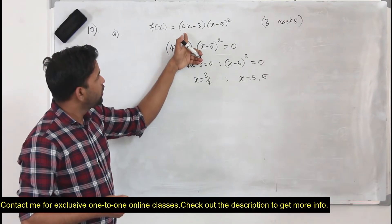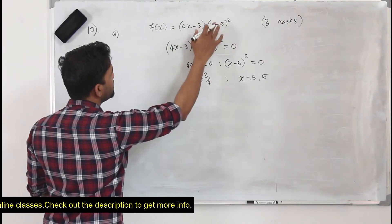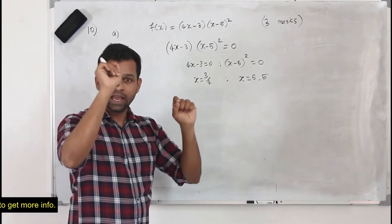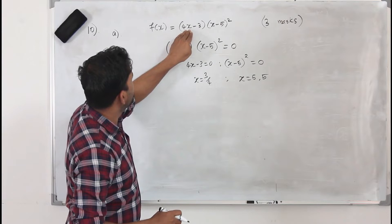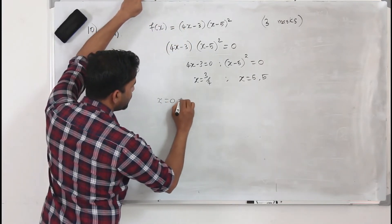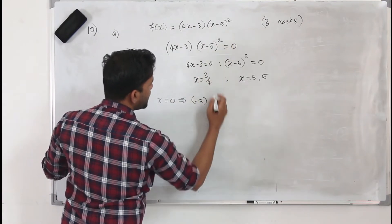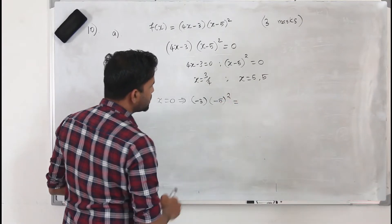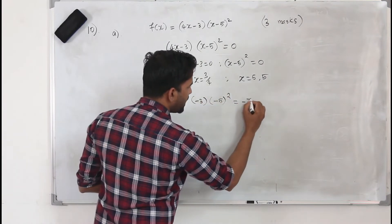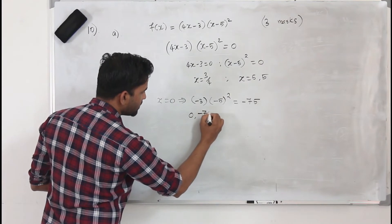Now we need to find the y-intercept. How do you find the y-intercept? In this function, substitute x equals zero, because the y-intercept is the point where x equals zero. When x is zero: (0 minus 3)(0 minus 5) squared equals minus 3 times 25 equals minus 75. So the y-intercept is the point (0, minus 75).